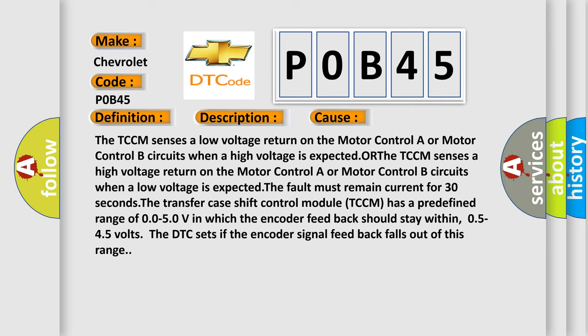The TCCM senses a low voltage return on the motor control A or motor control B circuits when a high voltage is expected, or the TCCM senses a high voltage return on the motor control A or motor control B circuits when a low voltage is expected. The fault must remain current for 30 seconds. The transfer case shift control module TCCM has a predefined range of 0.0-5.0V in which the encoder feedback should stay within, 0.5-4.5 volts. The DTC sets if the encoder signal feedback falls out of this range.